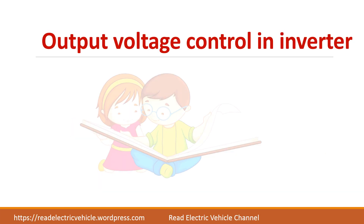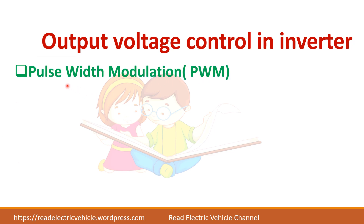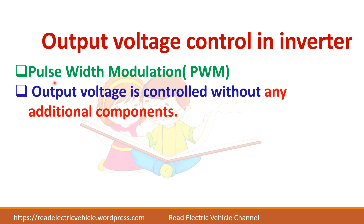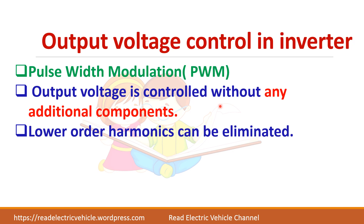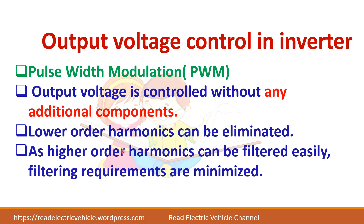There are various methods to control the output voltage in an inverter. One efficient method is Pulse Width Modulation, because it does not need any external components — by controlling the turn on and turn off of the switches you can control the output voltage. Using PWM, you can eliminate the lower order harmonics which are difficult to filter, and you can easily eliminate the higher order harmonics with a small size filter.